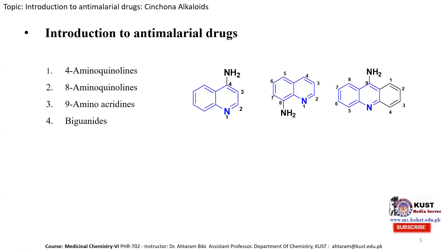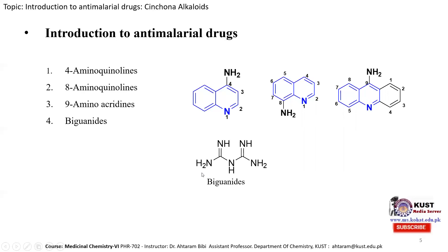The fourth class is biguanide, which is an open-chain compound. Two guanidine molecules combined give the biguanide structure. When we substitute the nitrogen atoms with alkyl or aryl groups, we obtain derivatives with good anti-malarial activity.